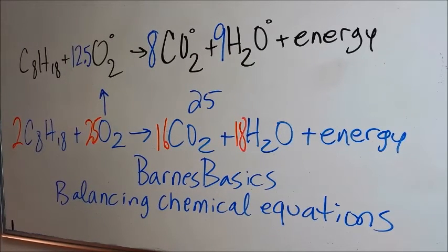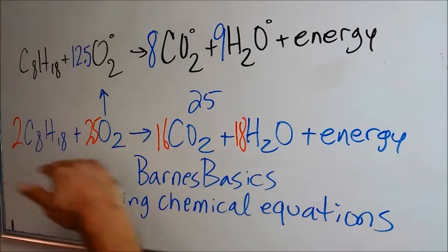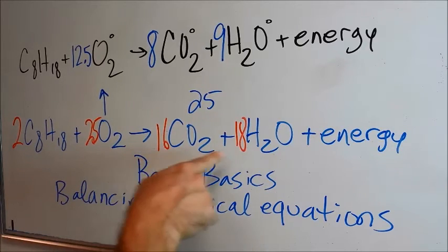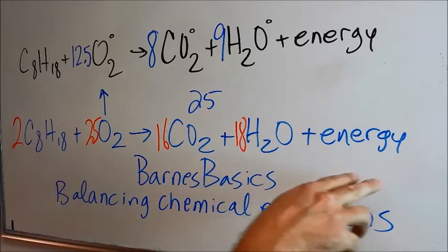Now remember in chemical equations we try to get everything to the least common multiple. And in this case two could divide into 16 and 18, but it won't divide into 25 for a whole number. So this is looking pretty good.